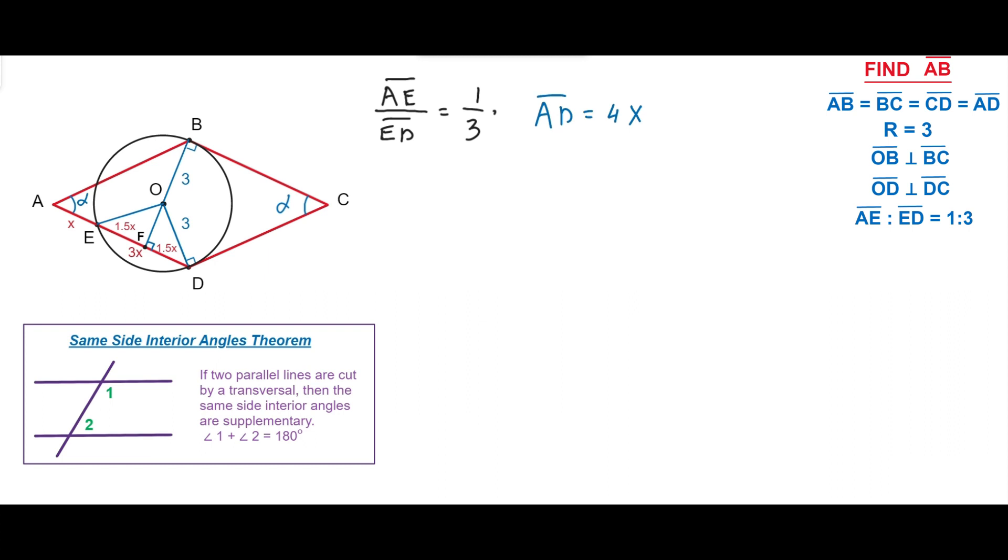Therefore, the angle ADC is going to be 180 minus alpha. The angle ADO can be calculated as 180 minus alpha minus 90 equals 90 minus alpha.